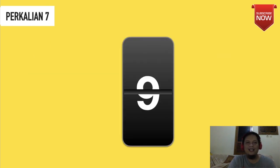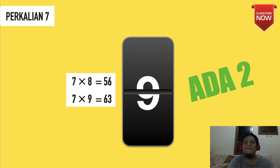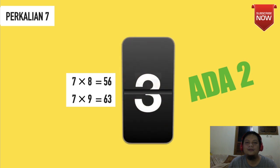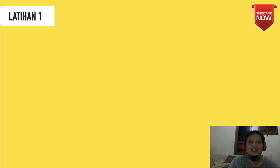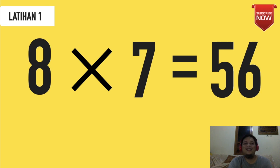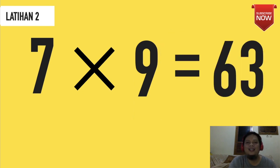Kita lanjut ke perkalian 7. Yang harus kita hafal hanya ada 2: 7×8=56 dan 7×9=63. Siap menghafal. Ready, start. Time's up. Sudah hafal ya, hanya ada 2. Latihan 1: 8×7 berapakah? 56. Satu lagi: 7×9 berapa? Tepat, 63.